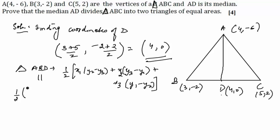of ABD: that will be 1/2[4×(-2-0) + 3×(0+6) + 4×(-6+2)], which gives us 3 square units. Similarly, finding the area of